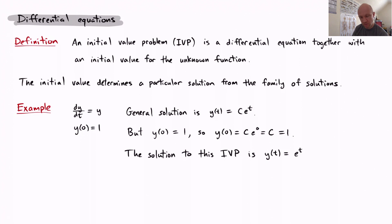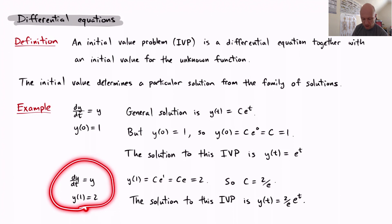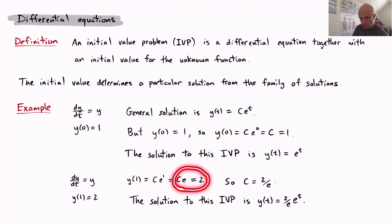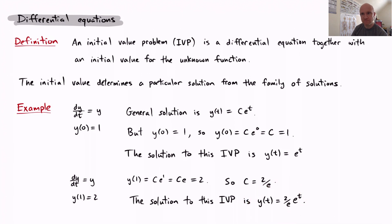Let's look at one more example. Same differential equation dy/dt equals y, but this time y of 1 equals 2. Plugging in t equals 1: y of 1 equals c times e to the 1, and that's supposed to equal 2. So c times e equals 2, giving c equals 2 over e. That's not pretty, but it's the value of c found from that initial value. So the solution to this initial value problem is y of t equals (2/e) times e to the t. See you next time.